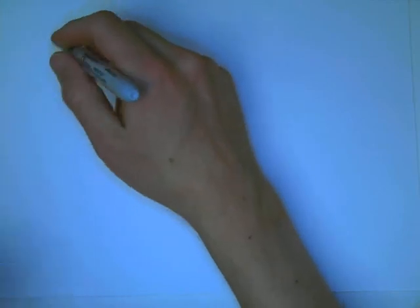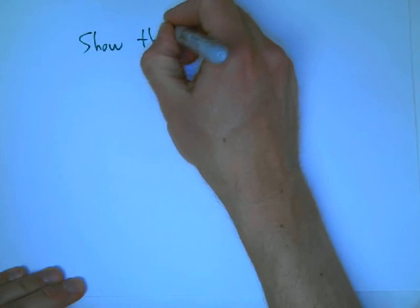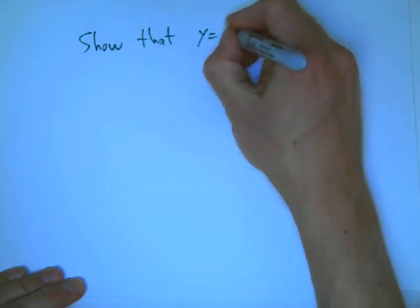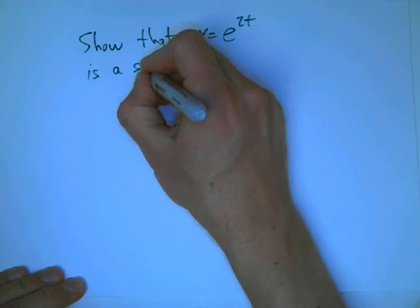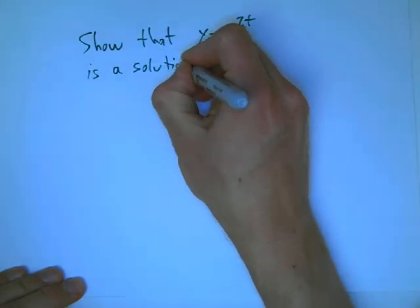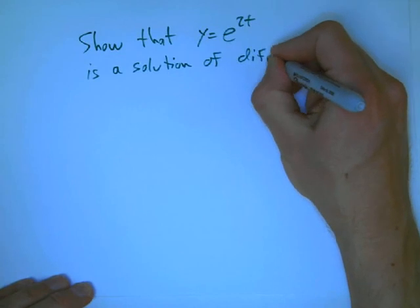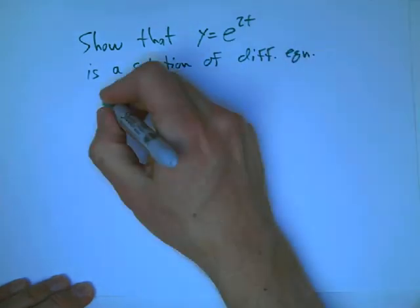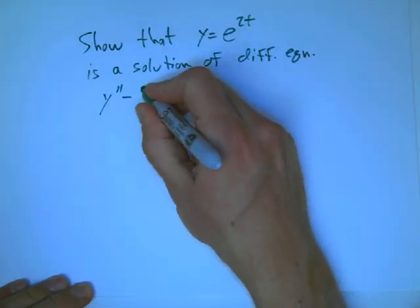So here's a couple of homework style problems to get you into the mode here. Here's one. Show that y equals e to the 2t is a solution of the differential equation y double prime minus 4y equals 0.